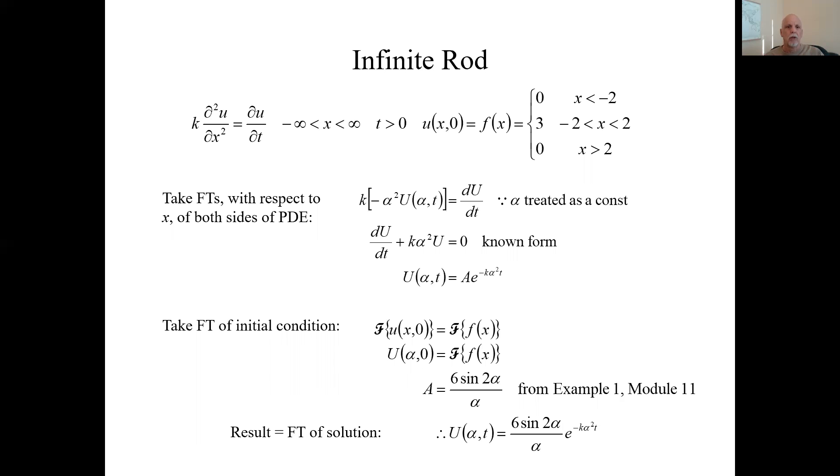Here's how we do the method. We take Fourier transforms of each term in this equation, term by term. Remember the Fourier transform of u, and we're going to do it with respect to x. What was the Fourier transform of the second derivative? It was minus alpha squared times this big U, the Fourier transform of the function itself. So we have k times this guy.